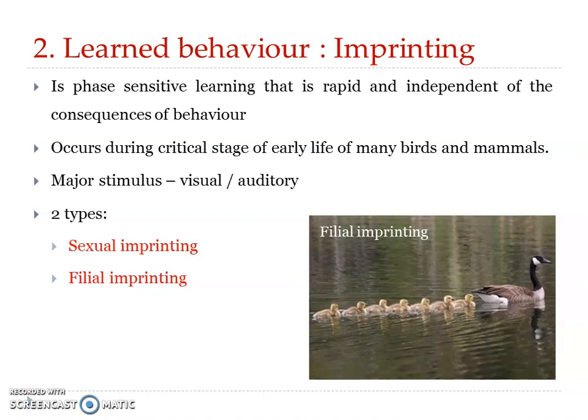The next type is imprinting, which is a very interesting area of study. Imprinting is a form of learning that occurs during the early life of many birds and mammals. It is a phase-sensitive learning — occurring during the early childhood phase — and it is rapid and independent of the consequences of behavior. It is more prominent among higher vertebrates such as birds and mammals, and the major stimuli for this kind of behavior are visual or auditory.